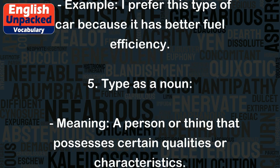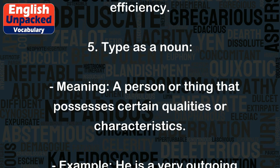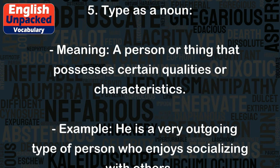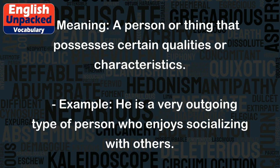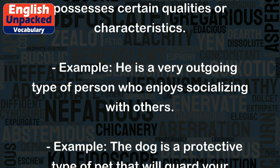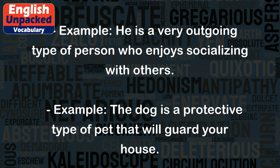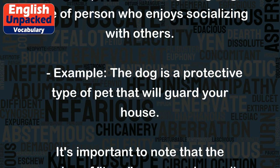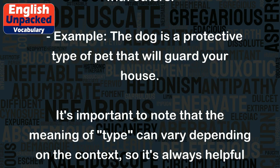5. Type as a noun, meaning a person or thing that possesses certain qualities or characteristics. Example: he is a very outgoing type of person who enjoys socializing with others. Example: the dog is a protective type of pet that will guard your house.